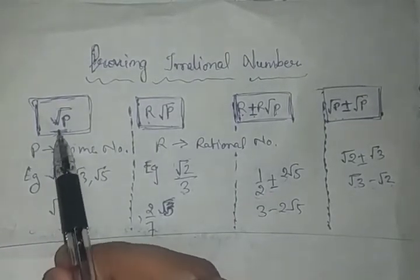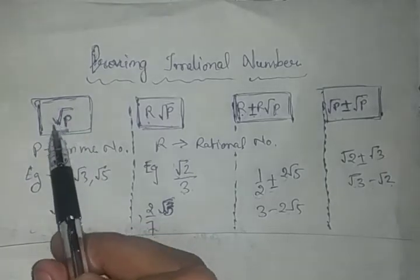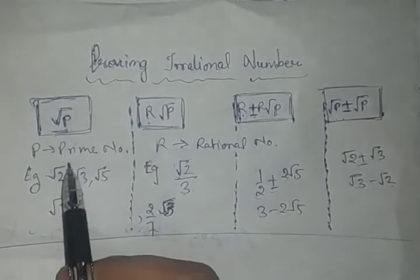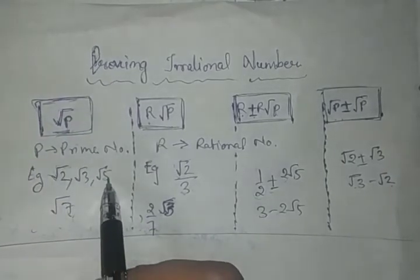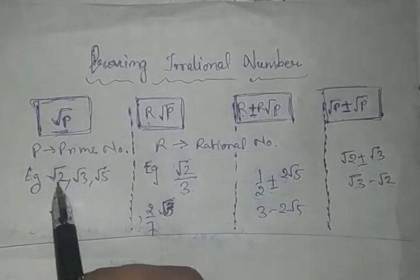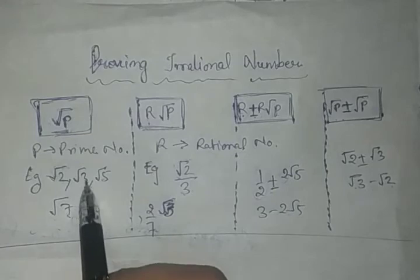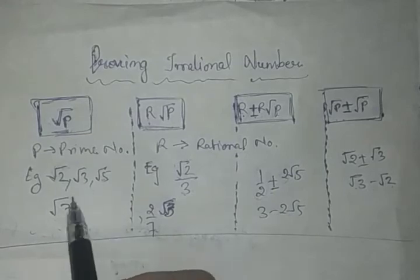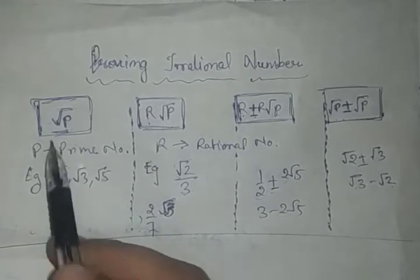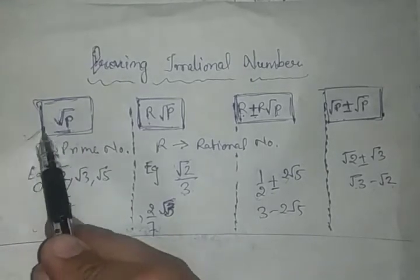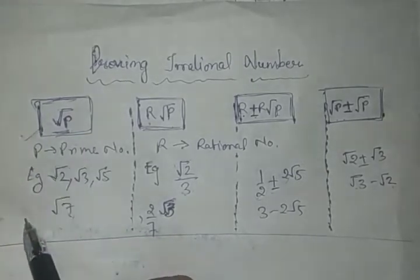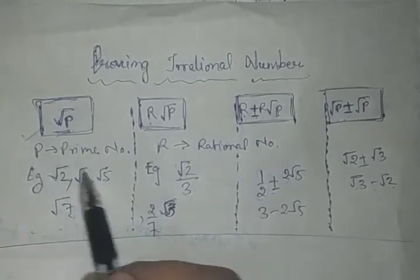पहला type है: square root के अंदर कोई भी prime number होगा — जैसे square root 2, square root 3, square root 5, root 7 — और उसे irrational prove करना होता है। एक ही method से किसी भी ऐसे question को solve किया जा सकता है।